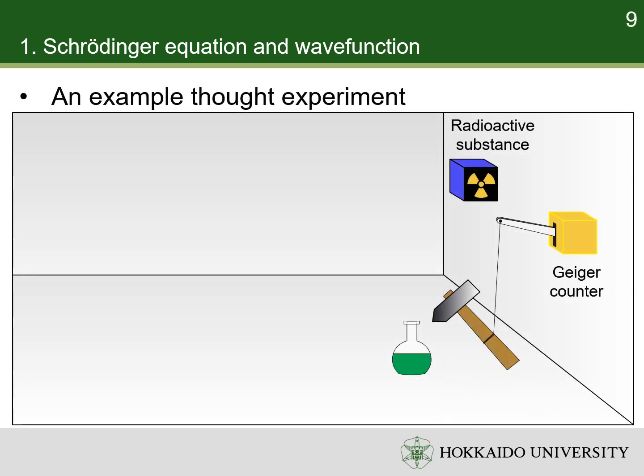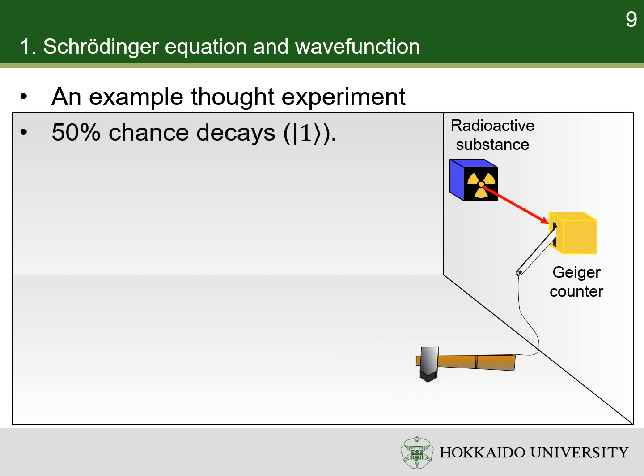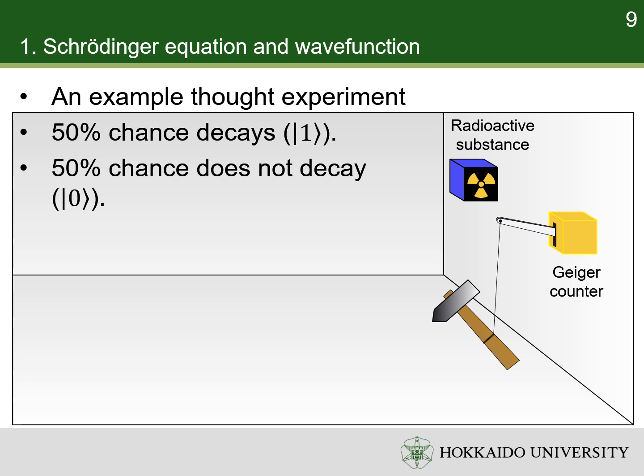For example, in a thought experiment, a radioactive substance and a Geiger counter are put in a chamber. If the radioactive substance decays, the counter releases a hammer that shatters a small flask. The radioactive substance is so small that, perhaps in one hour, only one of the atoms decays, but also, with equal probability, no atom decays.